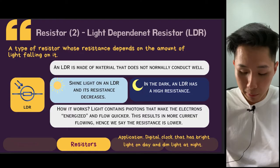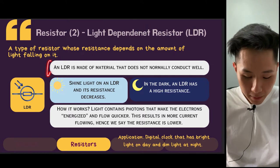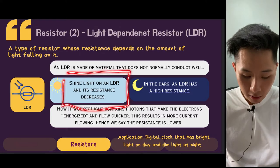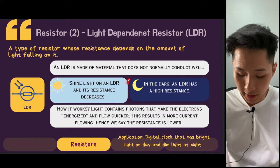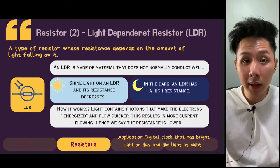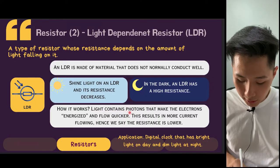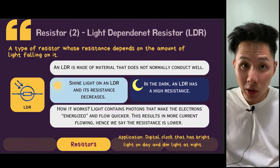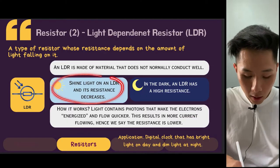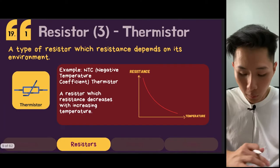The other resistor is the light-dependent resistor (LDR). It's a resistor that's dependent on light. An LDR is made of material that does not conduct well. If you shine light on an LDR, its resistance will decrease, whereas in the dark, an LDR will have high resistance. This is because light contains photons that energize electrons and make them flow quicker, resulting in more current flowing. Hence, in a bright environment, the resistance of the LDR decreases.